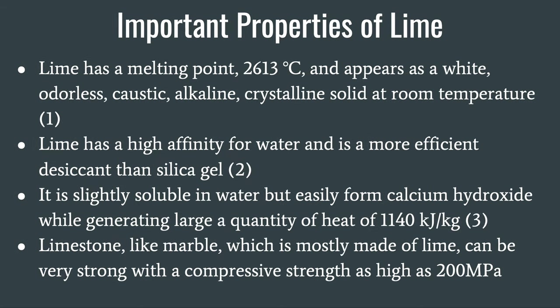What are the important properties of lime, and why is it so important to people? Lime has a melting point of 2,613 degrees Celsius, and appears as a white odorless caustic alkaline crystalline solid at room temperature of 75 degrees Fahrenheit. Lime has a high affinity for water and is a more efficient desiccant than silica gel. It is slightly soluble in water, but it easily forms calcium hydroxide while generating a large quantity of heat of 1,140 kJ per kg.